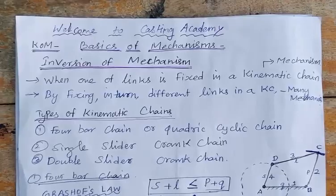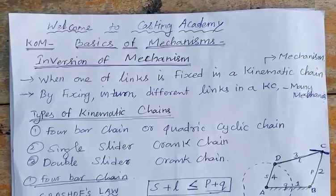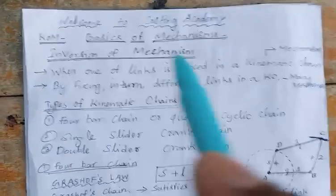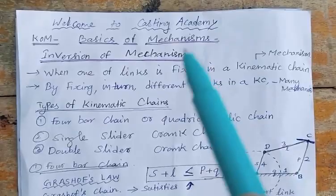Our next topic is inversions of mechanism. As we already know, a kinematic link, kinematic pair, and kinematic chain — when one of the links in a kinematic chain is fixed, that is called a mechanism.